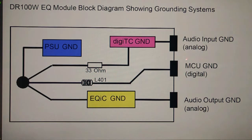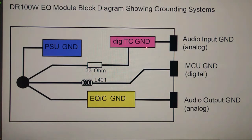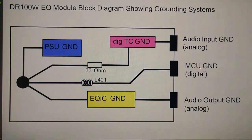Our main concern here is the digital signal. The digital signal — specifically the I2C signal — tends to interfere with the low-level analog signal being processed in the equalizer module if the grounding system is not properly managed.